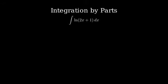For integration by parts, we use the formula uv minus the integral of vdu. We need to choose u and dv carefully. Let's let u equal natural log of 2x plus 1 and dv equal dx.